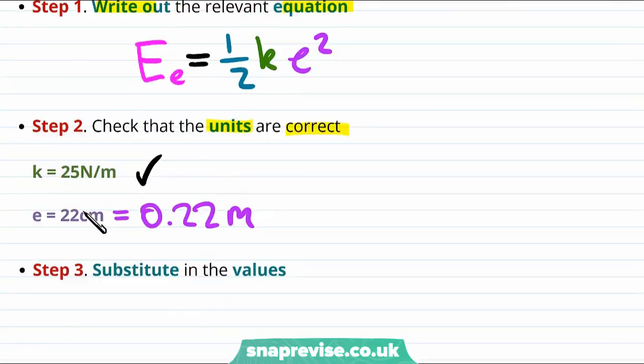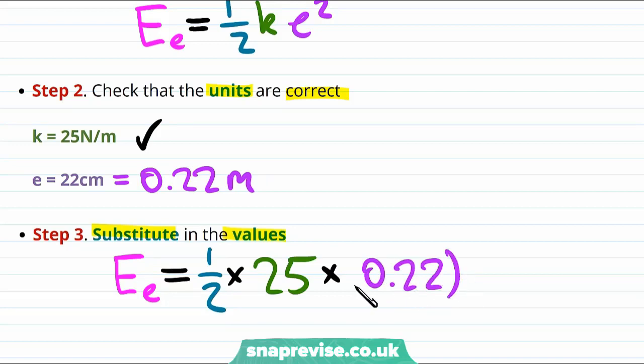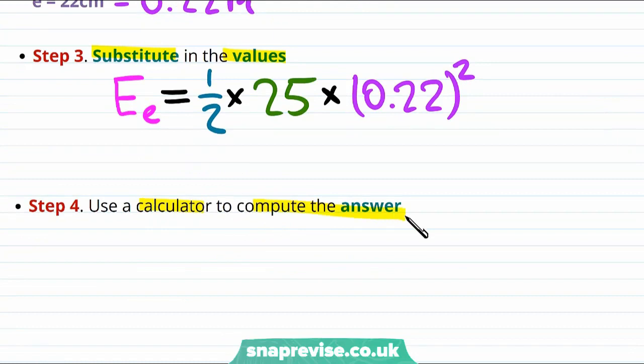Now that our units are correct we can substitute our values into the equation. And this tells us that the elastic potential energy is equal to one half multiplied by the spring constant multiplied by the extension squared. And finally putting this into a calculator we will be able to compute the answer for the elastic potential energy. And we will find that the elastic potential energy is equal to 0.6 joules to one decimal place.